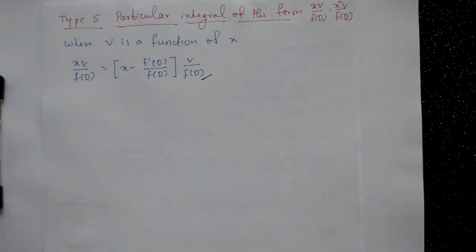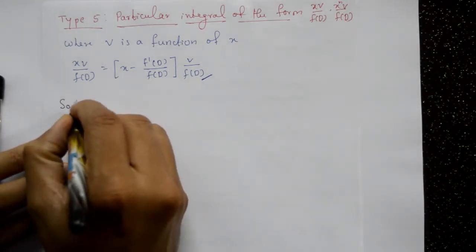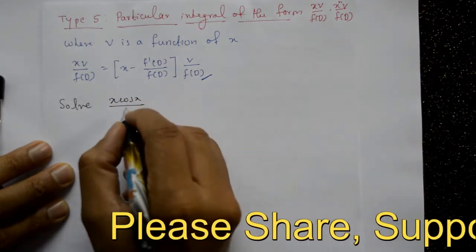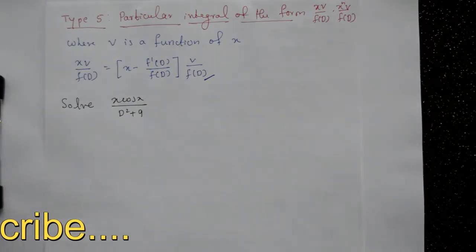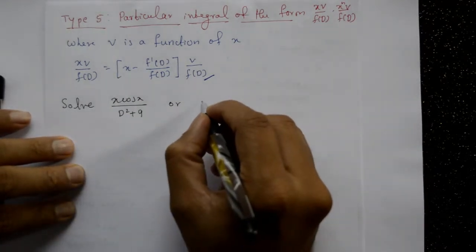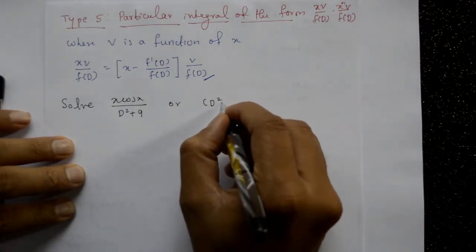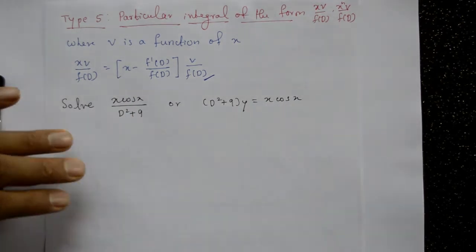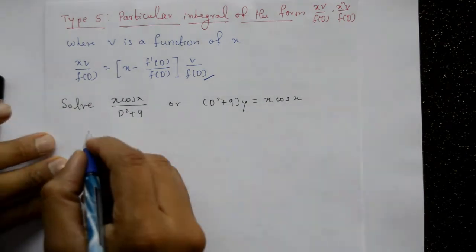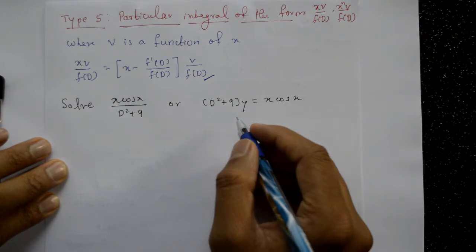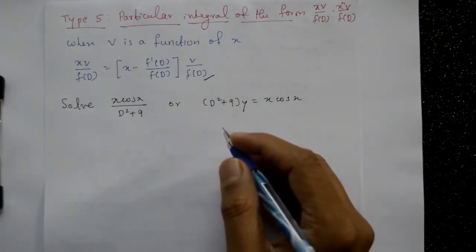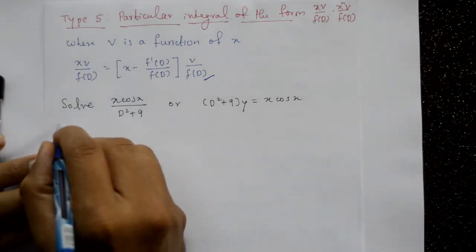Now take an example. Solve: x·cos(x) / (D²+9), or equivalently, (D²+9)y = x·cos(x). Find the complementary function and particular integral.